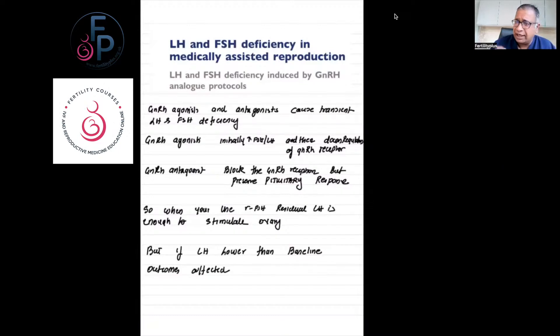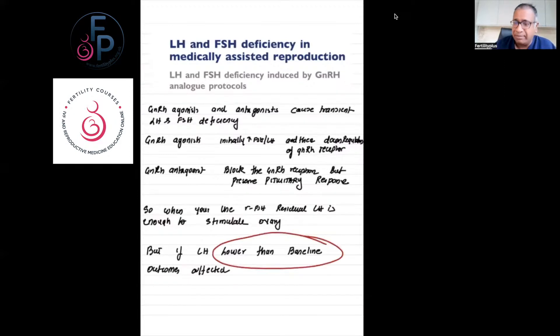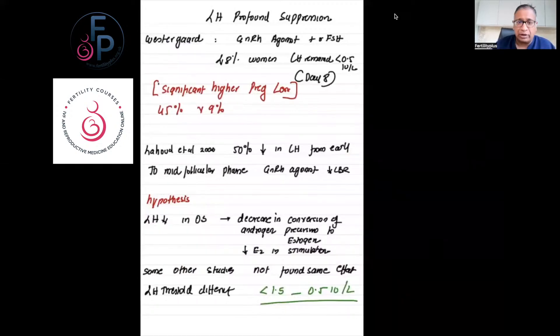Let's now come back to the question which this paper is trying to answer: LH and FSH deficiency in medically assisted reproduction induced by GnRH analog protocols. You have GnRH agonist and antagonist, and both cause transient LH and FSH deficiency. The GnRH agonist initially increases FSH and LH—that's the flare protocol—and then down-regulation occurs at the GnRH receptor site. In the antagonist, it blocks the GnRH responses. When you use recombinant FSH, the LH present is sufficient to stimulate the ovaries, but here is the key: if the LH is lower than baseline, then outcomes may be affected.